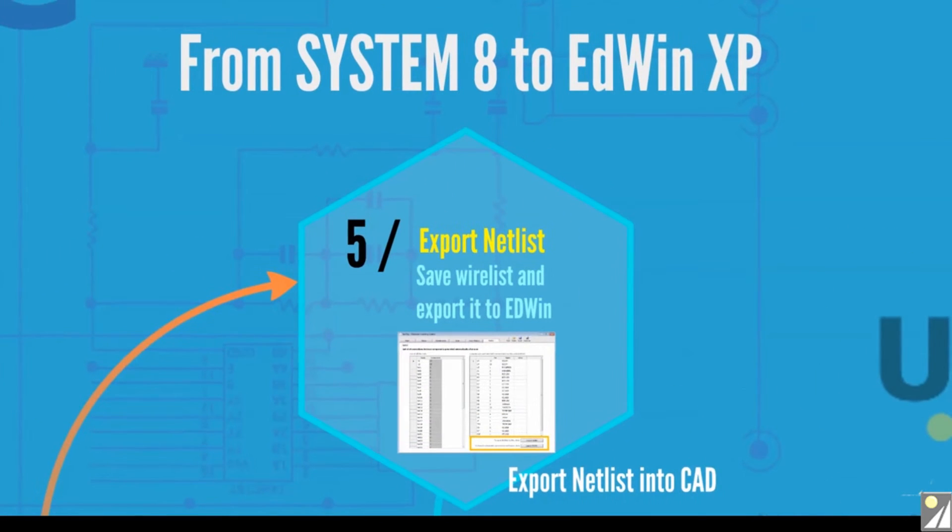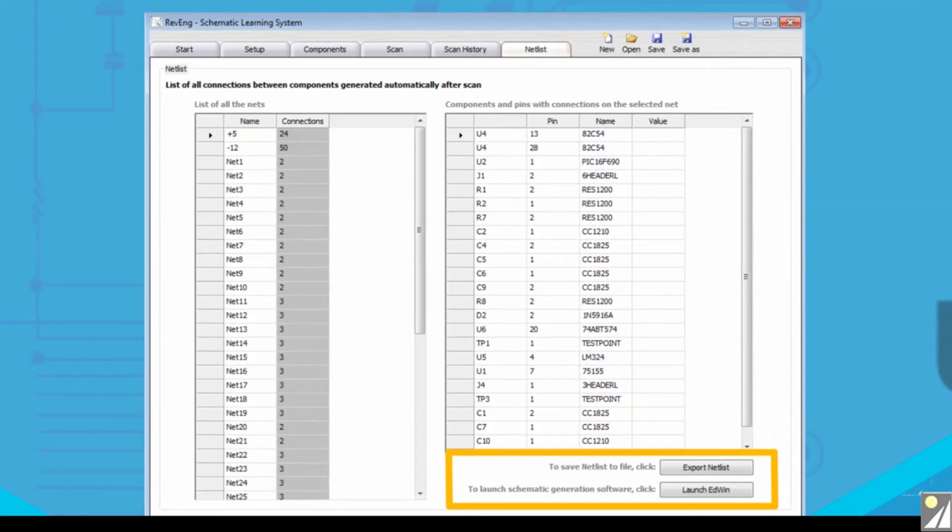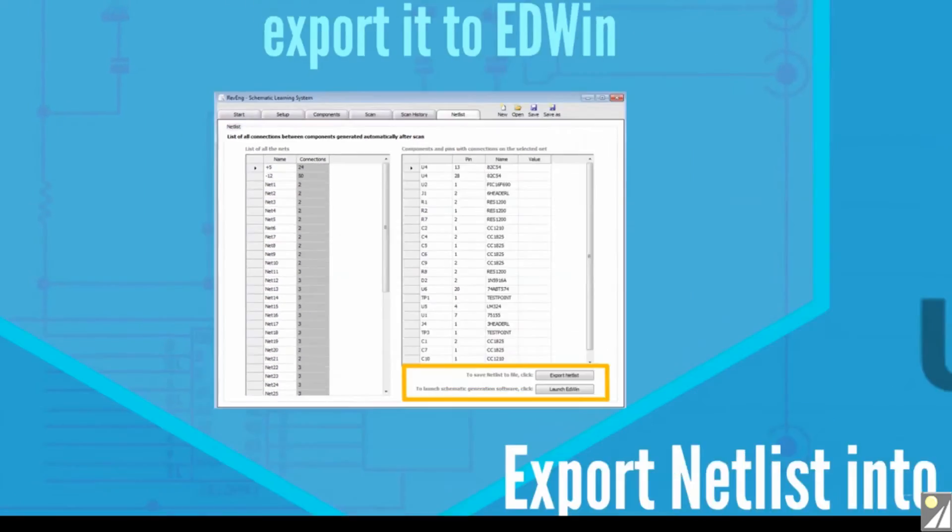Once the system finishes scanning the PCB, a detailed netlist will be displayed in the Systemate software. When ready to proceed, click Export Netlist to save it as a text file. Click Launch Edwin to run the EDA CAD tool and import the netlist.